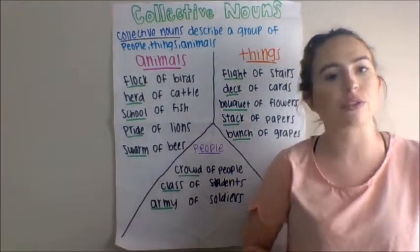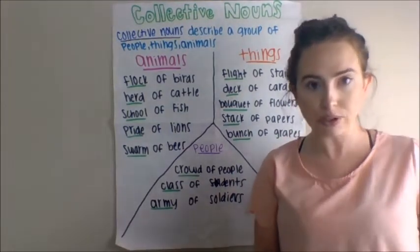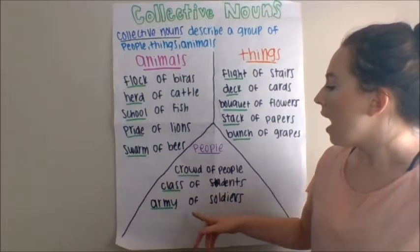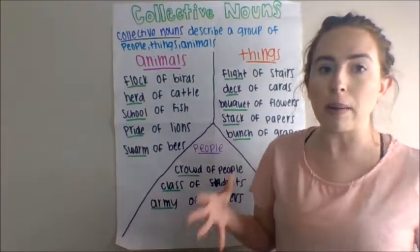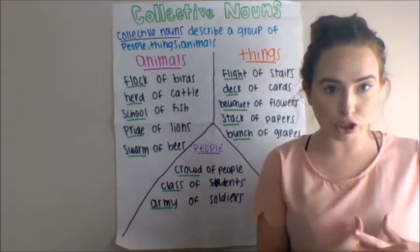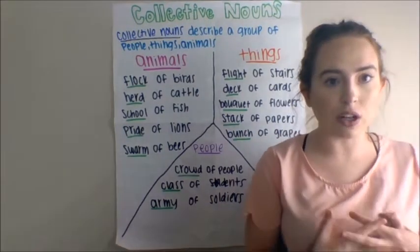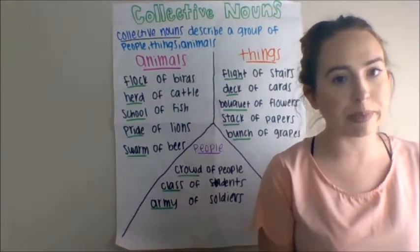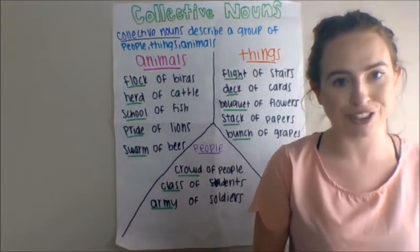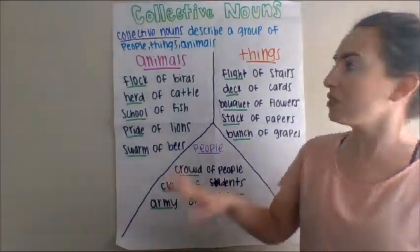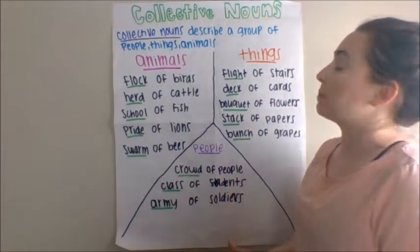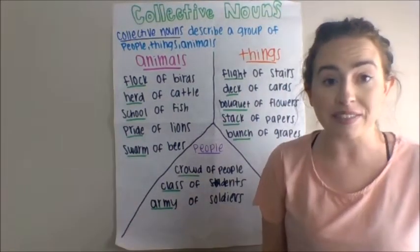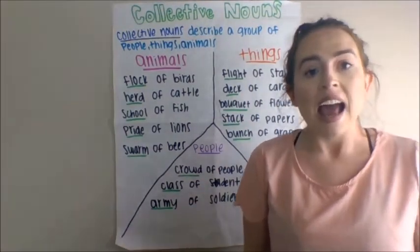Like you're in a class — you're in a group with students. And then the last one, a bunch of soldiers together, is called an army of soldiers. So those are just some examples of collective nouns.